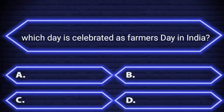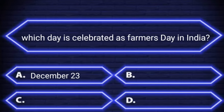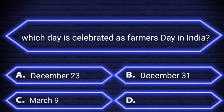Which day is celebrated as Farmer's Day in India? A. 23rd December. B. 31st December. C. 9th March. D. 12th March. Your time starts now.